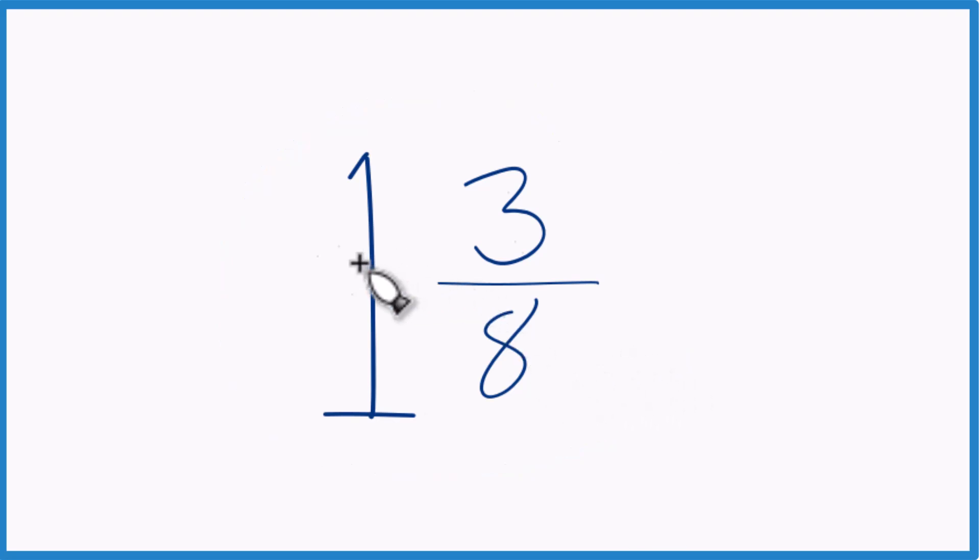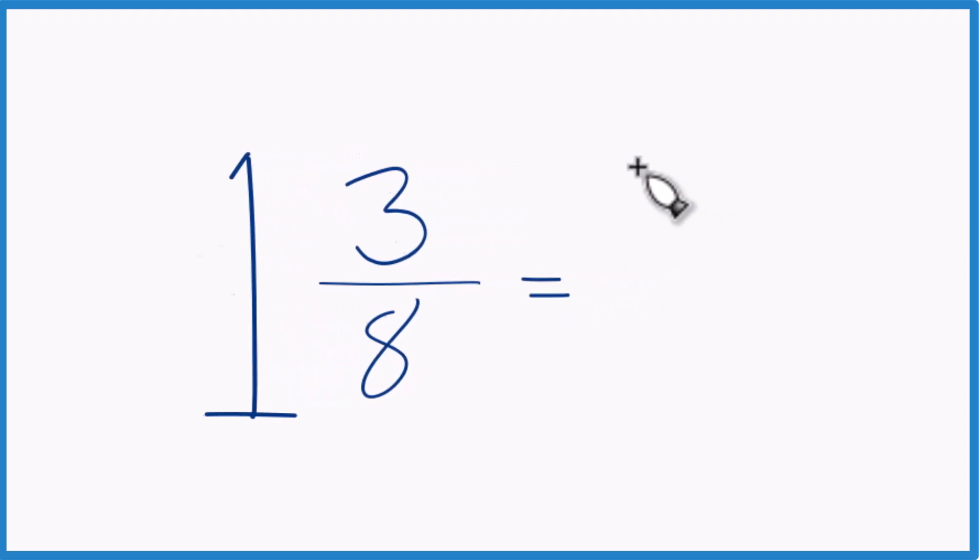So here's how you do it. You take 1 times 8, that's 8, plus 3, that's 11. That's going to be the numerator.